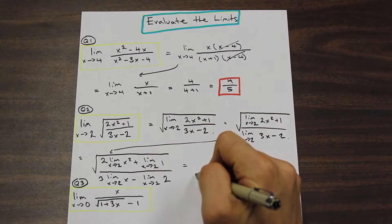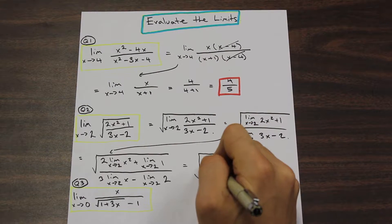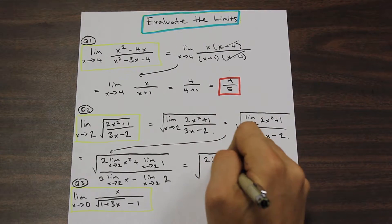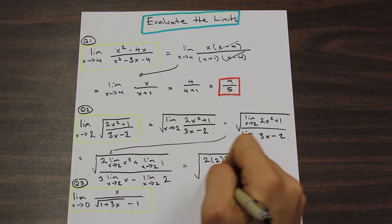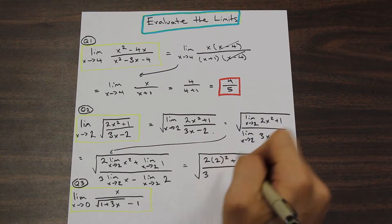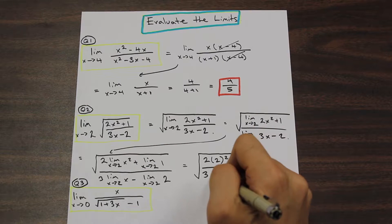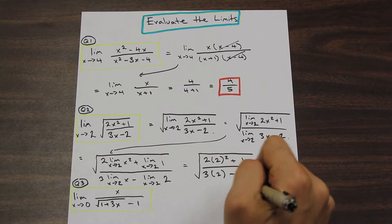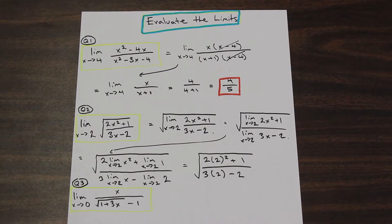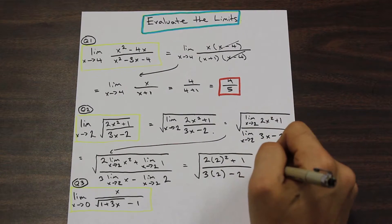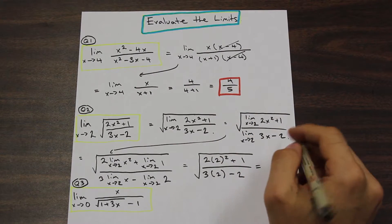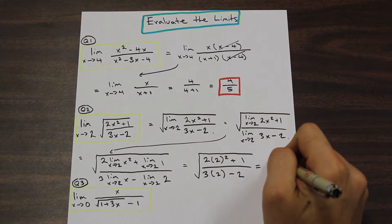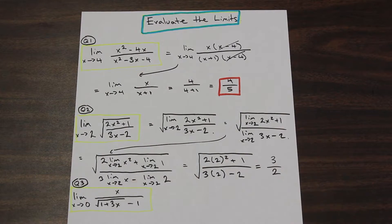Let's start plugging numbers in. We have two times two squared plus one, over three times two minus two. Computing that gives us root nine over four, and simplifying gives us three over two — that is our answer.